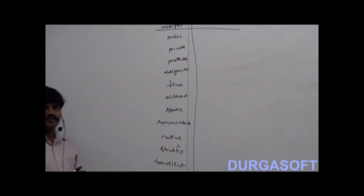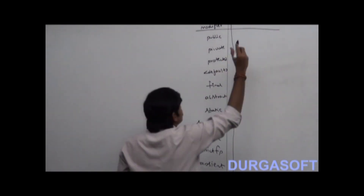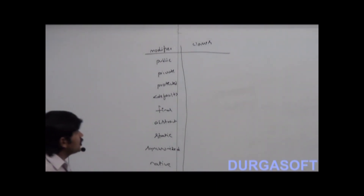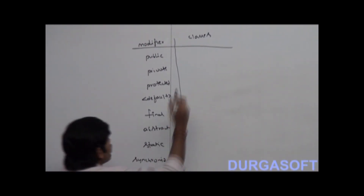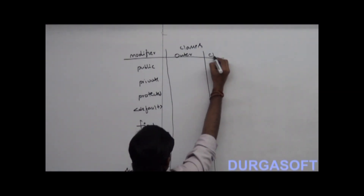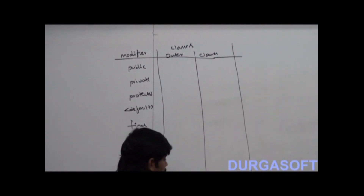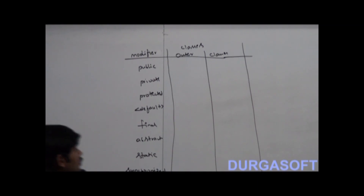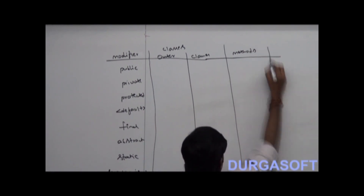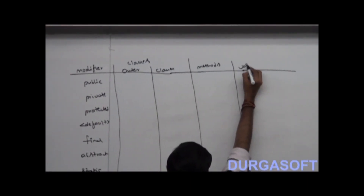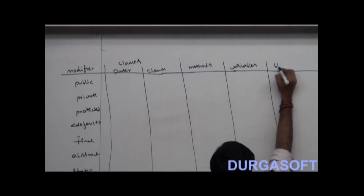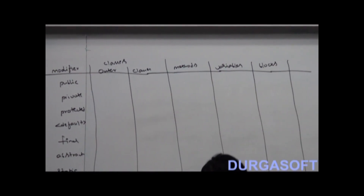These are the 12 modifiers. Whether these modifiers are applicable for classes or not — among these, which are applicable for outer classes and which are applicable for inner classes? Next, are these modifiers applicable for methods or not? Are these modifiers applicable for variables or not? And are these applicable for blocks or not?